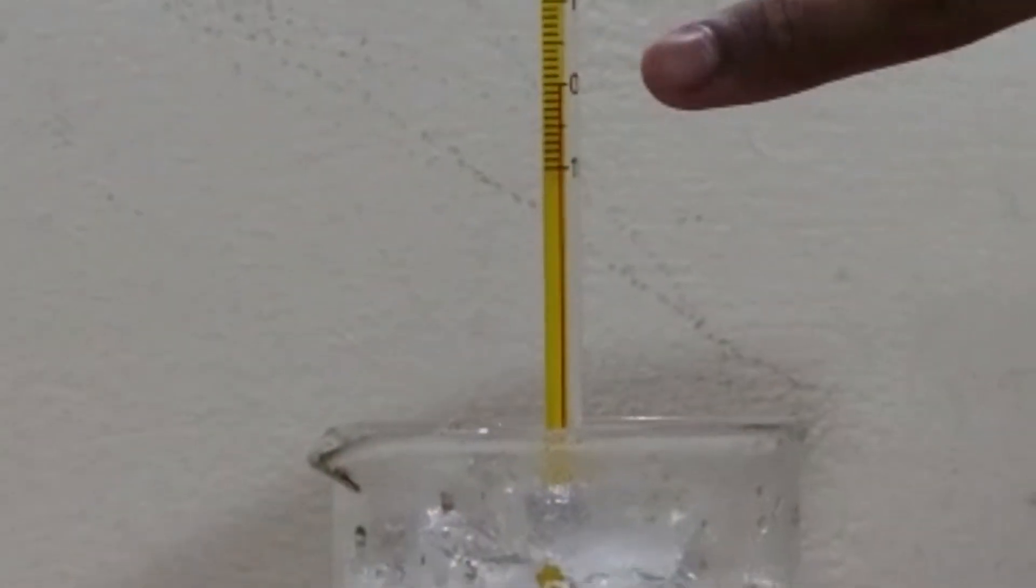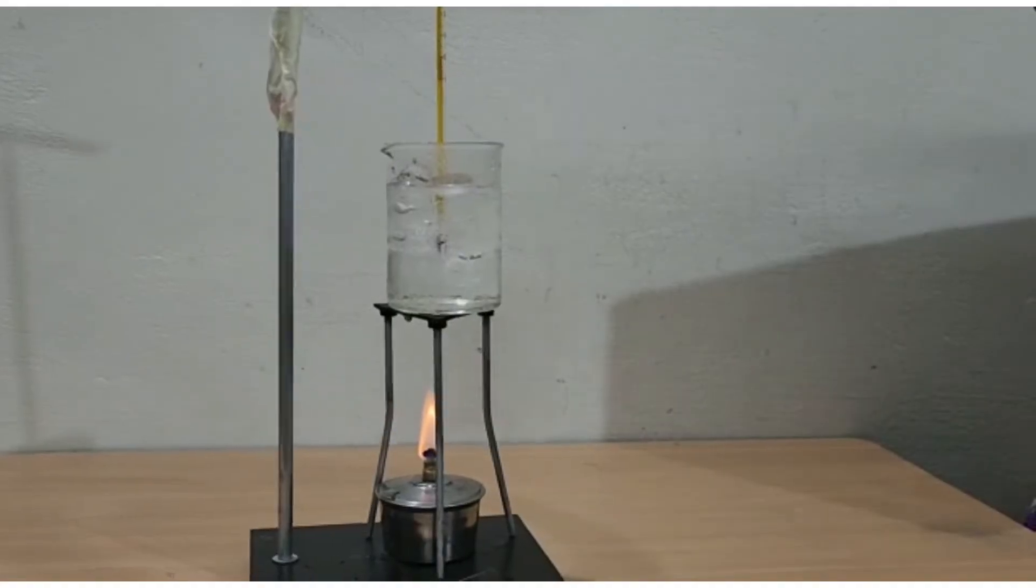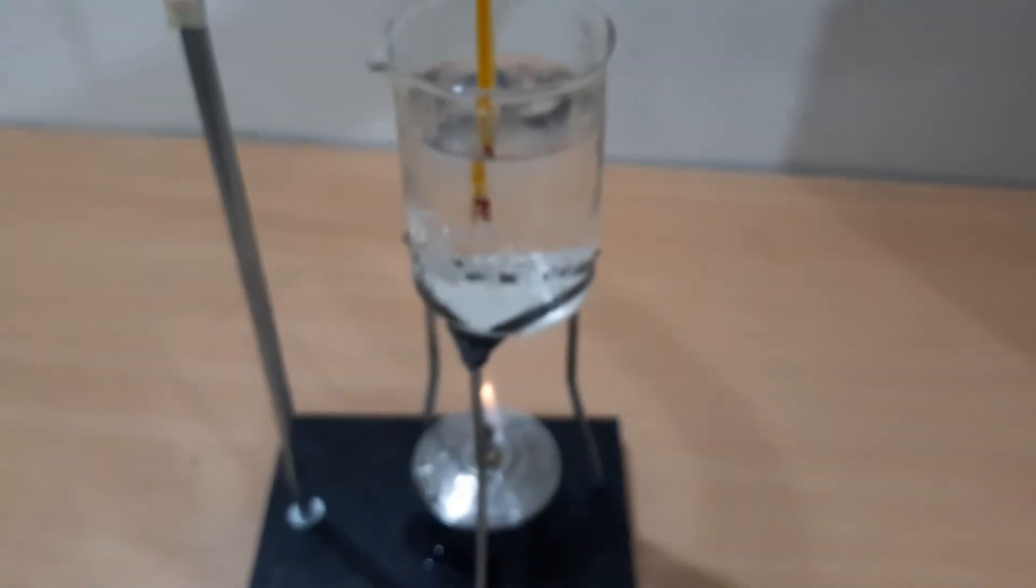As long as there remains even a little of ice in the beaker, the temperature does not rise. It remains constant at zero degrees Celsius. This shows there is no rise in the temperature during the melting of ice.